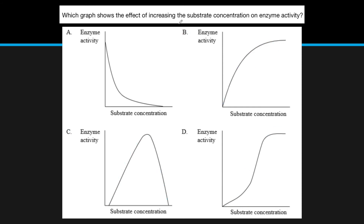You might not really need to know the full explanation between the answer choices when you come to a test, but if you're able to identify those graph features, you'll be able to get the answer B.